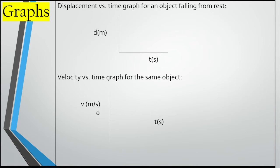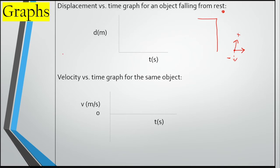Now let's take a look at some graphs to recall what we did in a previous unit. We have our displacement versus time graph for an object falling from rest. An important thing to note is that we need to label our origin at the bottom, pointing upwards. Up in the Y direction is positive and down in the Y direction is negative. We want to put our origin at the bottom of our cliff, or the ground. So we should have a displacement versus time graph that starts up high and ends down low. Since it's experiencing acceleration, it's going to be a curved line.